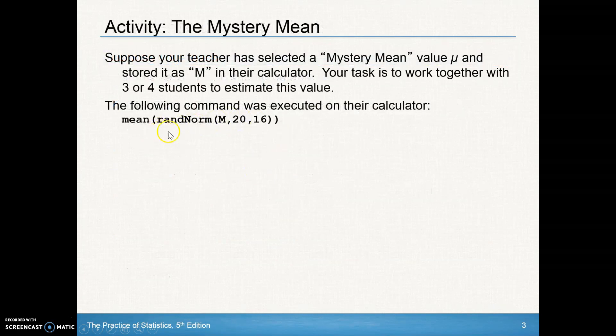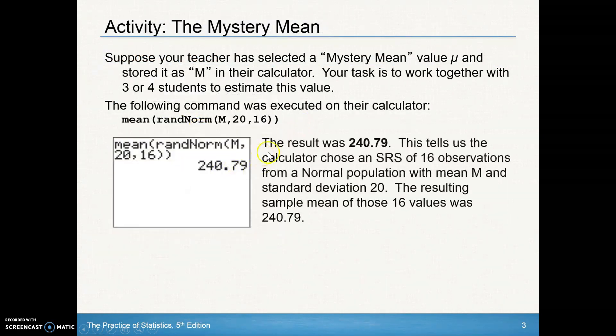So put this command on a calculator. You're not going to have to know how to do this. And the result this one got was 240.79. You saw that I had several different answers on my screen after doing it many times. So let's just summarize this. This tells us the calculator chose a random sample of 16 observations from a normal population with mean some M value that's hidden to you and a standard deviation of 20.